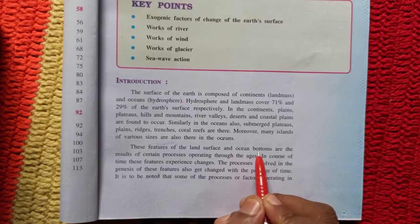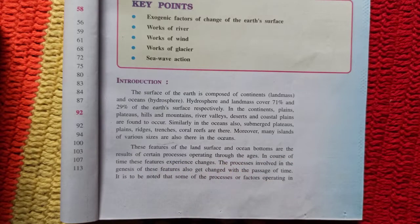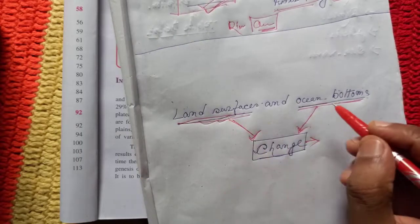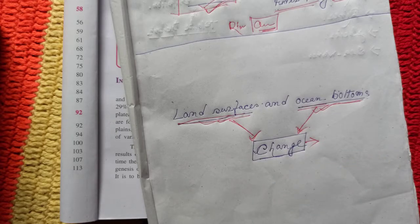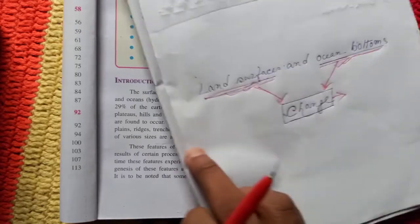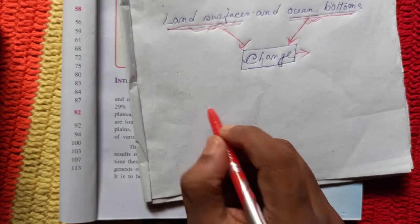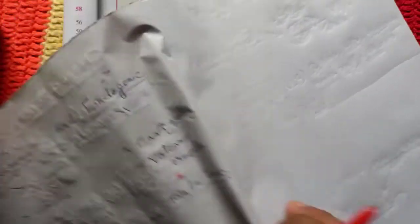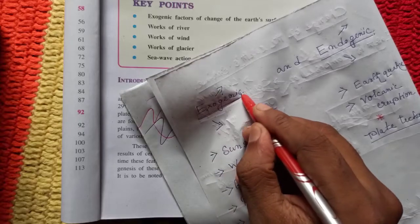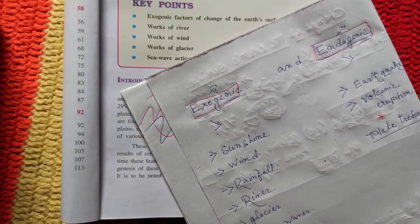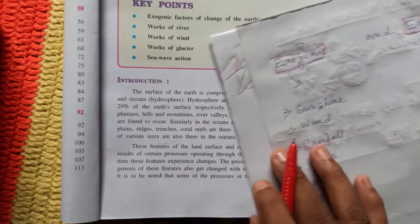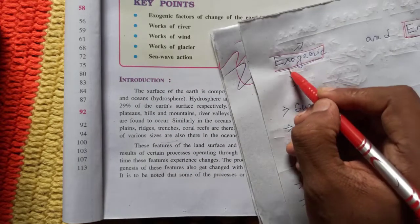The features of the land surface and the ocean bottoms are the result of certain processes operating through the ages. The land surface and ocean bottoms change over a long period of time, due to two forces: exogenic forces and endogenic forces.